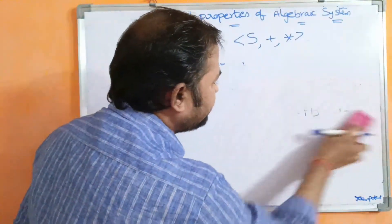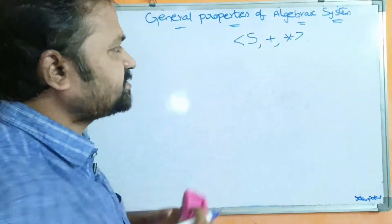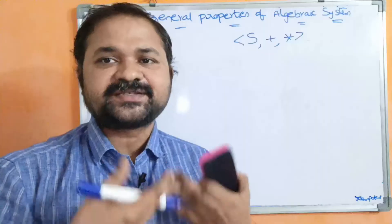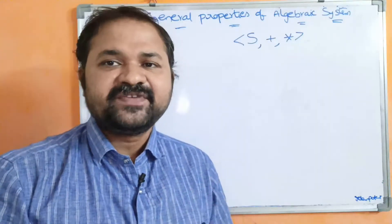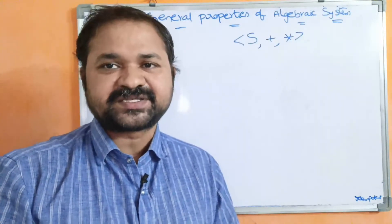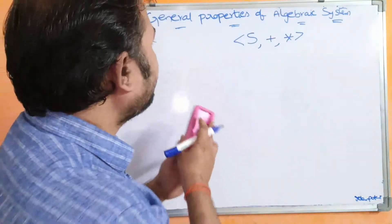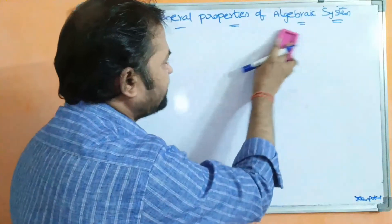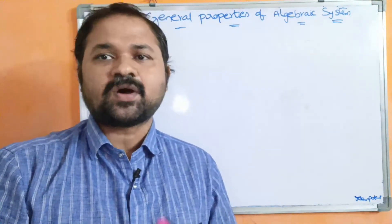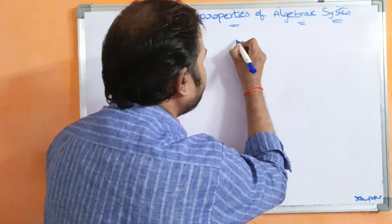An algebraic system contains a non-empty set, and we can perform various operations on it — like addition, subtraction, multiplication, division. We mainly perform binary operations. Now let us see the general properties of the algebraic system. There are totally eight properties.